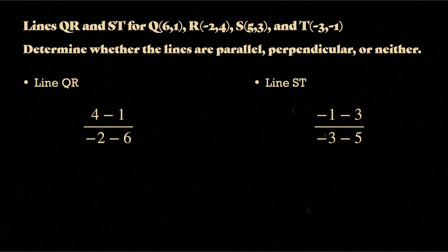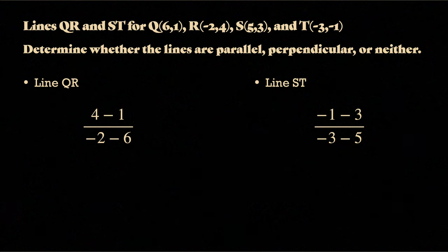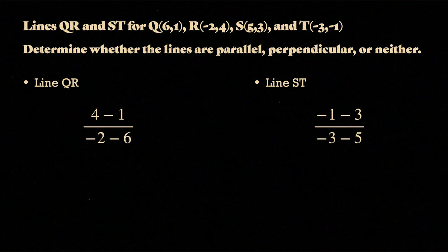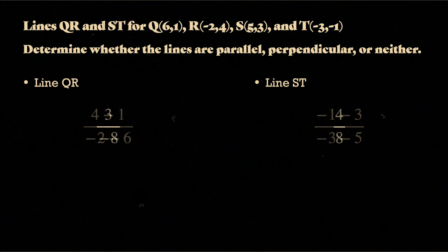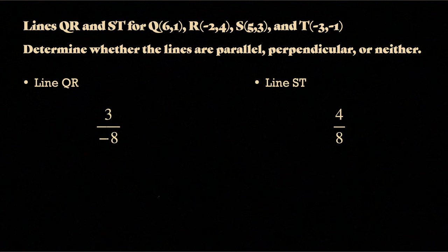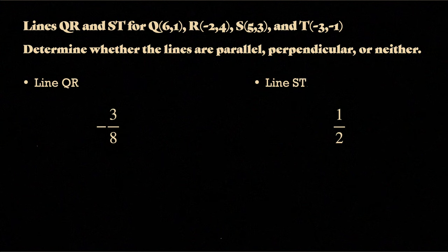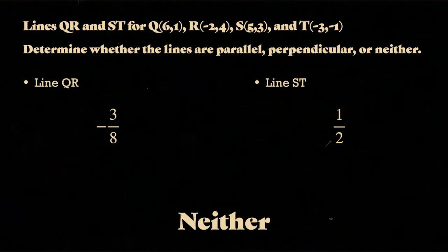So 4 minus 1 is 3, negative 2 minus 6 is negative 8. So we have 3 over negative 8, and then 1 minus 3 is negative 4 over negative 3 minus 5, which is negative 8. So at that point, these end up simplifying to be negative 3, 8, and positive 1 half, which means they are neither.